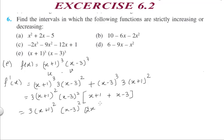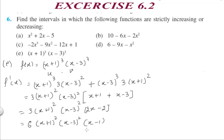Solving, we get 3(x+1)²(x-3)² times (2x - 2). Taking 2 common gives us 6(x+1)²(x-3)²(x-1). For the critical points, putting f'(x) = 0, we get three values of x: x = -1, x = 3, and x = 1.